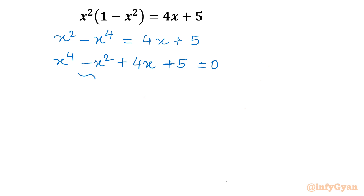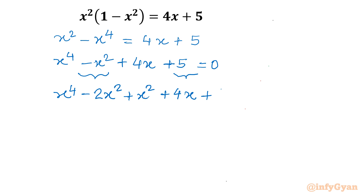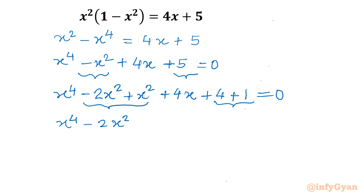Now I will split the minus x squared and the 5. I write x to the power 4, and for minus x squared I write minus 2x squared plus x squared, then 4x as it is, and 5 I split as 4 plus 1, equal to 0. I collect x to the power 4 minus 2x squared plus 1 in one bracket, and the remaining terms x squared plus 4x plus 4 in the second bracket, equal to 0.